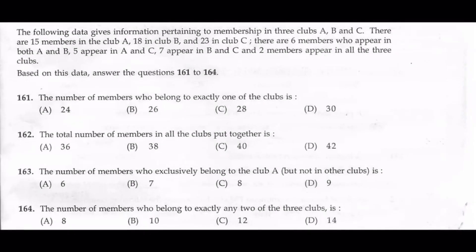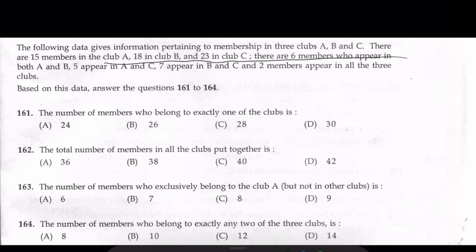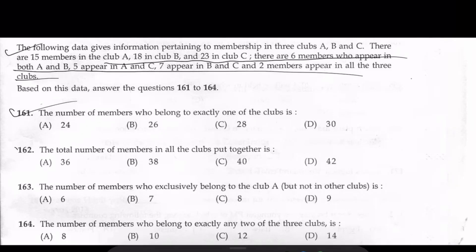The following data gives information pertaining to membership in three clubs A, B, and C. There are 15 members in Club A, 18 in Club B, 23 in Club C. There are six members who appear in both A and B. We are asked to find questions 161, 162, 163, and 164.